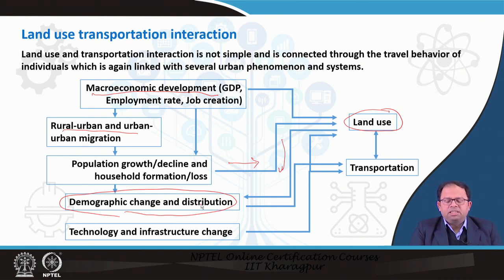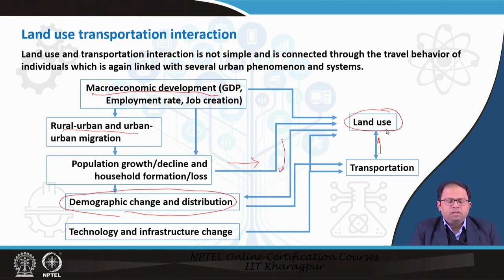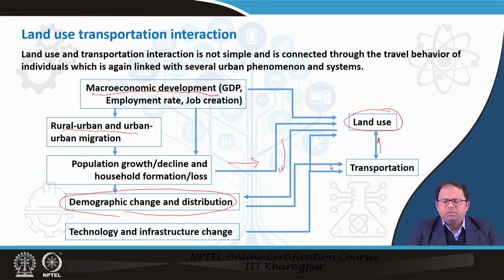When demographic patterns and distributions change in an urban area, that also leads to change in the transportation system — mode choices, travel distances, and travel times all change, which will also change land use choices and accessibility. There is also change in technology and infrastructure, which changes the basic structure of the transportation network and certain kinds of building use, like green buildings. The different systems are linked in both ways, and these linkages are not straightforward; there are feedbacks coming from each system to every other system.